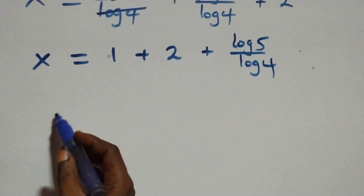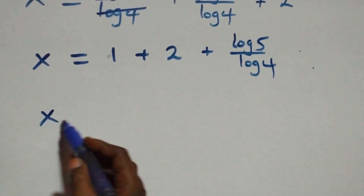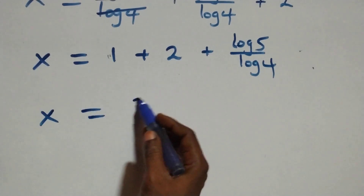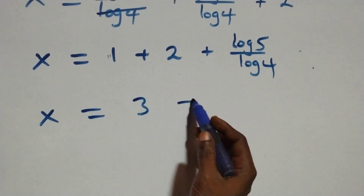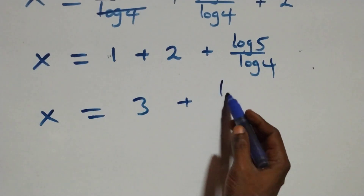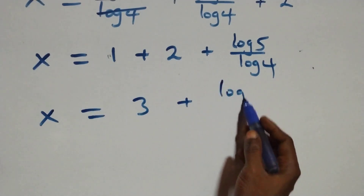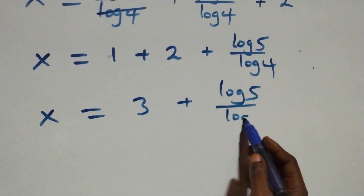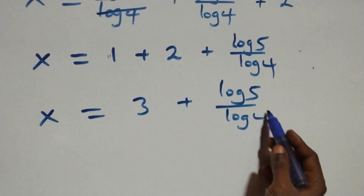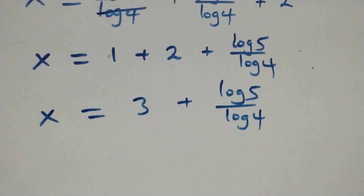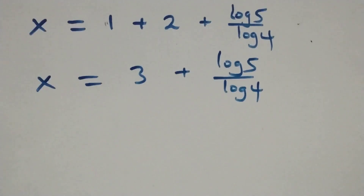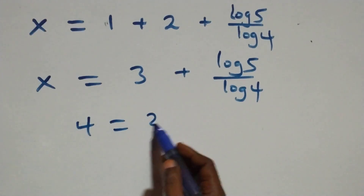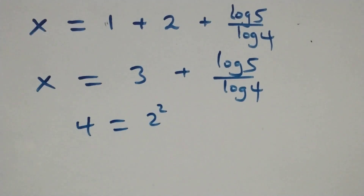Log 4 over log 4 equals 1, so x equals 1 plus 2, that's 3, plus log 5 over log 4. From here we can express 4 as 2 times 2, which is 2 squared.